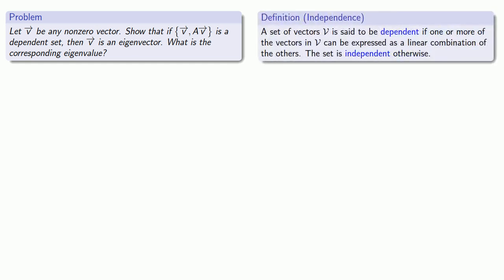So remember, a set of vectors is said to be dependent if one or more of the vectors in our set can be expressed as a linear combination of the others. Since there's only two vectors in our set, then we can write one of them in terms of the other one.